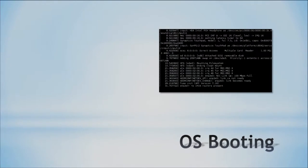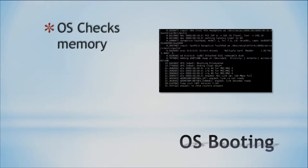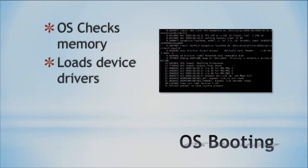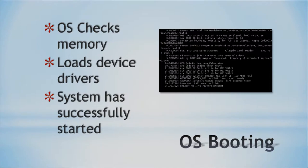Here is a screenshot of an operating system actually booting — this is the Linux operating system where you can see a lot of different text scrolling by. Our operating system goes and checks the memory, your physical memory also known as RAM, makes sure everything's OK and usable. Next, the operating system will load device drivers — specialized pieces of software that interact with other hardware such as your video card, sound card, or network interface card. Once this has completed, our system has successfully started.